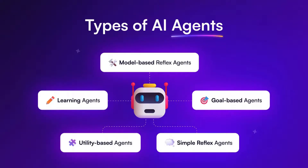Intelligent agents come in various types depending on how they operate and respond to the environment. Simple reflex agents act purely on predefined rules, reacting to current percepts without considering future consequences. Model-based reflex agents are more advanced, as they maintain an internal model of the world, enabling them to handle partially observable environments.